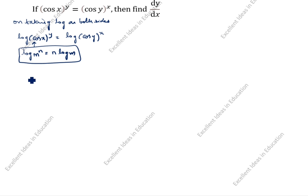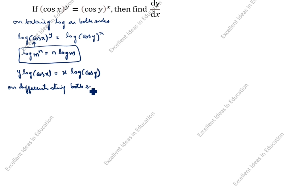What we will do is take log on both sides. Log of cos x power y is equal to log of cos y power x. The formula is: log m power n is equal to n log m. We will split as per this formula, giving us y log cos x equal to x log cos y. Now differentiating both sides with respect to x.